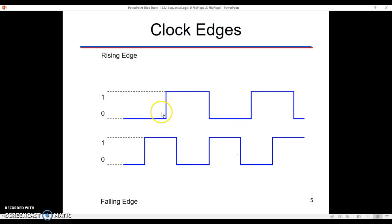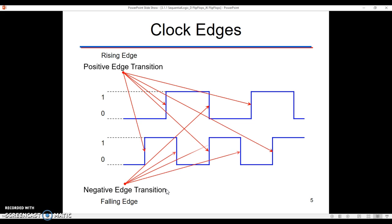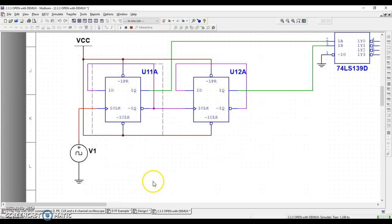Likewise, we have what's called a falling edge, a negative edge. And the negative edge would be whenever the 1 goes from the 1 back down to 0. So we have all of these different edges, and what that means is this. Let's go back and let's look at MultiSim.